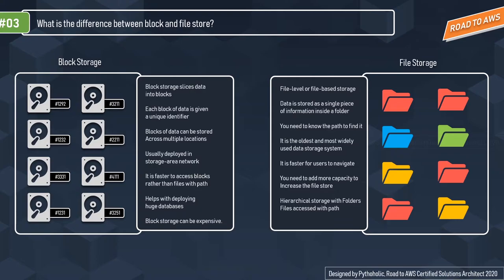Blocks of data can be stored across multiple locations — you can move blocks across regions by creating snapshots or copying them. For file storage, you need to know the path to find the file. For example, in Windows, if your file is in C:\Program Files, you must navigate to that path. Block storage is usually deployed in storage area networks for faster access. On the block storage side, access is faster because if you know the address, you don't have to search for the file.